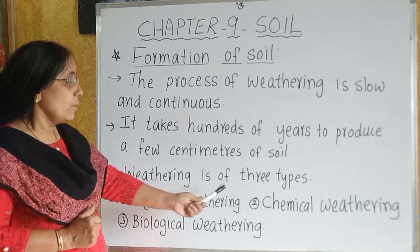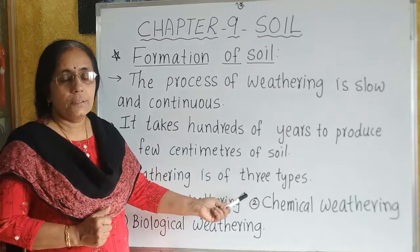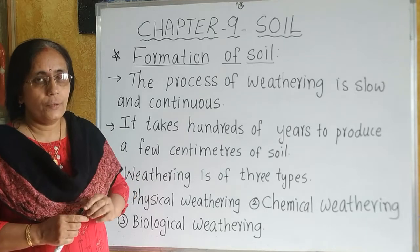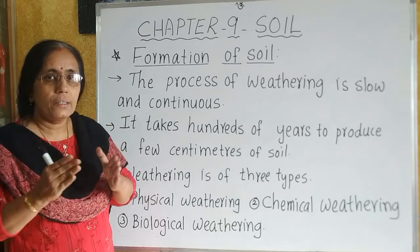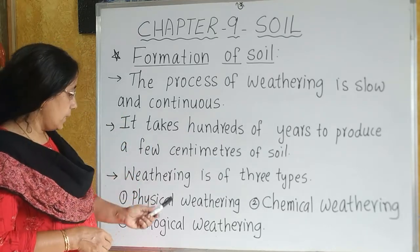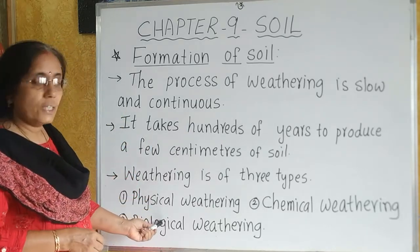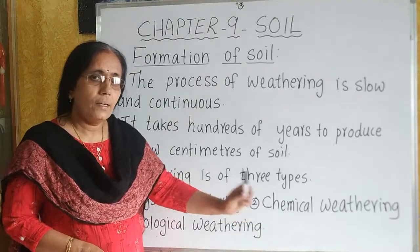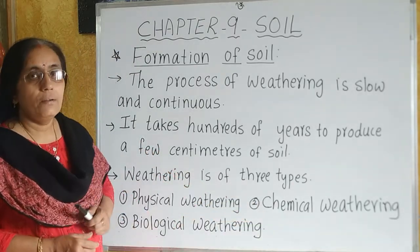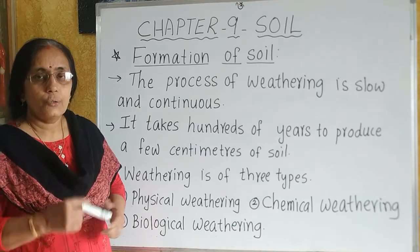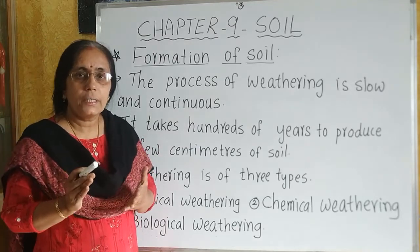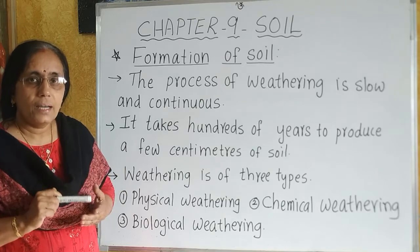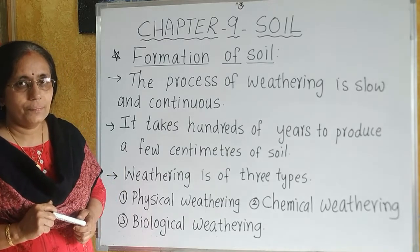Weathering is of three types. Depending on the cause of weathering, it can be divided into three types: physical weathering, chemical weathering, and biological weathering.